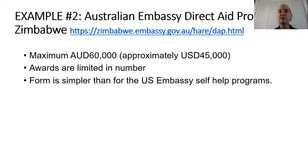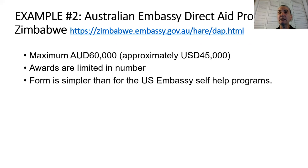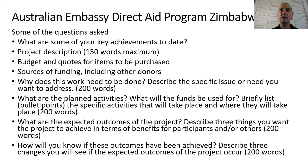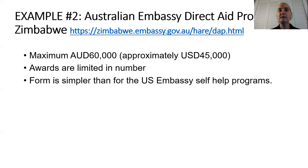Here's our second example: the Australian Embassy Direct Aid Program to Zimbabwe, which you can find in detail at the link shown. This application is simpler than the U.S. Embassy Self-Help Program, but it's for more money — $45,000. However, the awards are limited in number. Both the Australian and U.S. Embassies have similar programs for other countries; I'm just giving you examples for one country each.